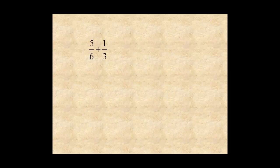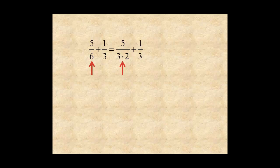To add these fractions, factor the first denominator. You can see the two denominators share a common factor of 3. To add, the second denominator needs a factor of 2. So multiply the second fraction by 2 over 2.